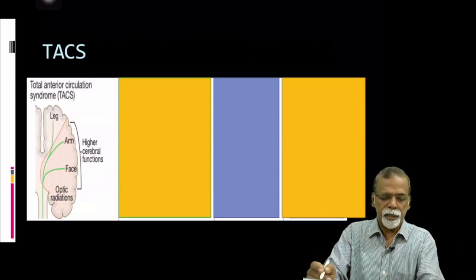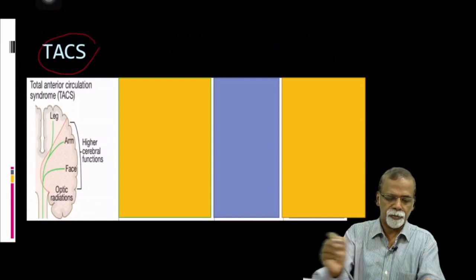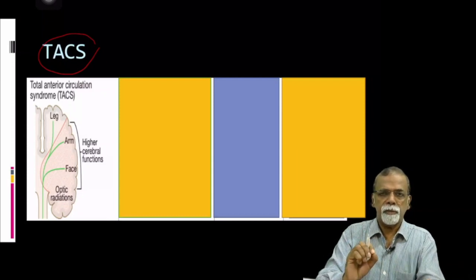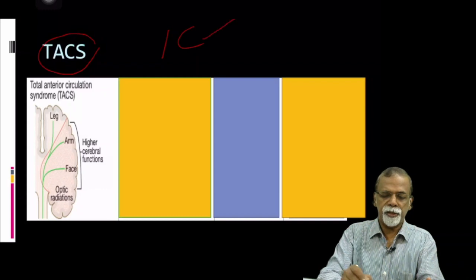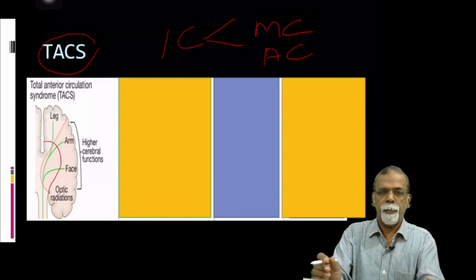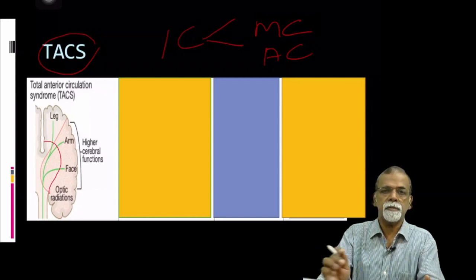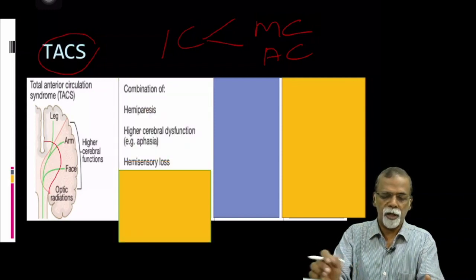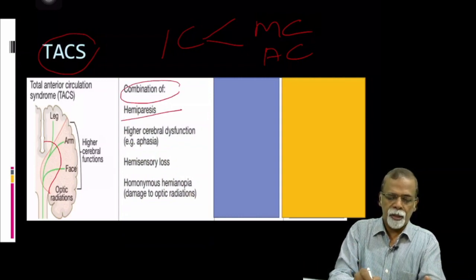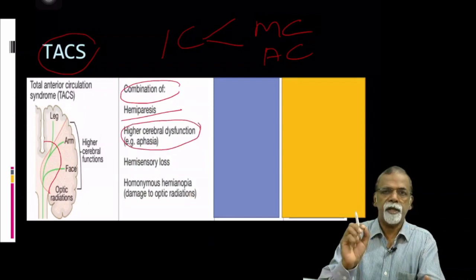We will now go to the clinical classification of ischemic stroke. First, we take TACS — total anterior circulation stroke. When the total anterior circulation is blocked, this includes the internal carotid artery, which divides into the middle cerebral and the anterior cerebral arteries. Both have to be affected, so you can see that an extensive area of the brain is affected. In a total anterior circulation stroke, a major chunk of the brain is lost.